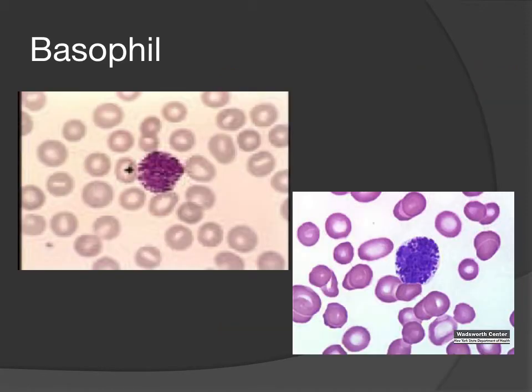Here are a couple of images of basophils. The one on the right shows your classic basophil with lots of deep purple granules. The nucleus is multi-lobed, much like the neutrophil and eosinophil, but sometimes it's hard to see the nucleus through all those deep purple granules.